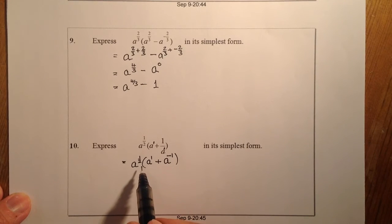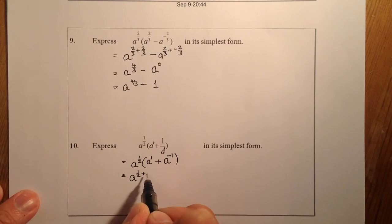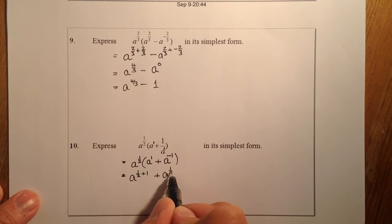Remember, when I multiply, I'm going to add the indices together. So that's going to be a to the power of 1 half, plus 1, and that's going to be plus, the plus sign in between here, a to the power of 1 half, plus minus 1.